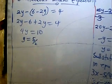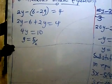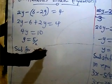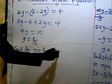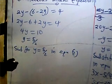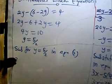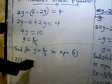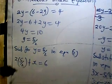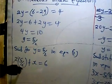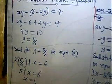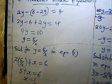Substituting y equals 5/2 into equation 2 to get x: 2 times (5/2) plus x equals 6. The 2s cancel, giving 5 plus x equals 6, so x equals 1. Therefore y equals 5/2 and x equals 1.